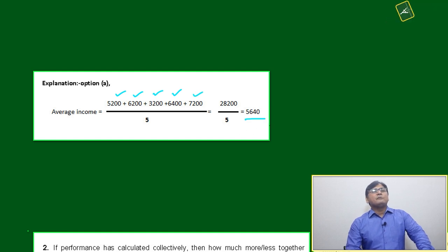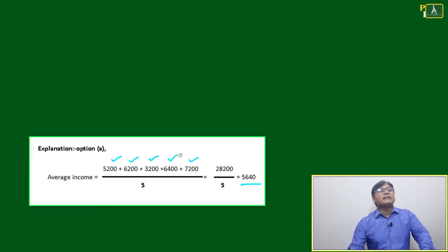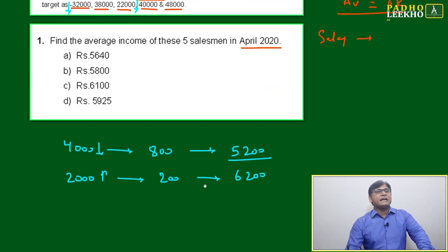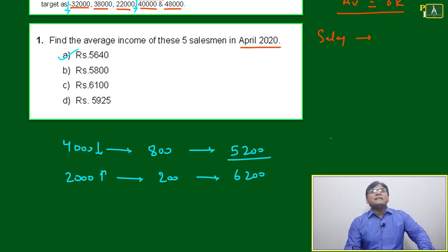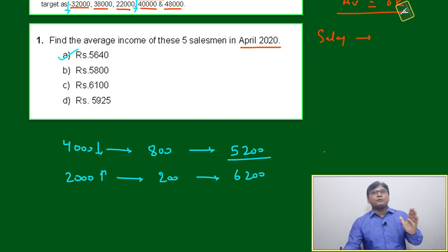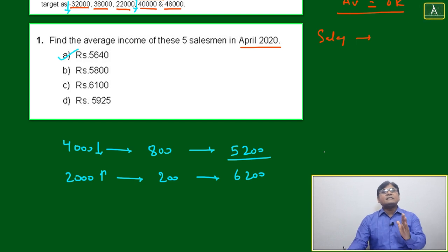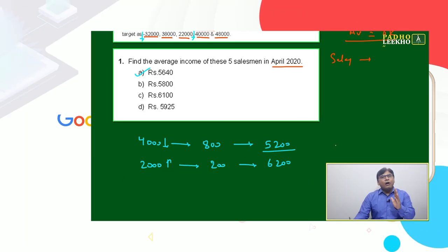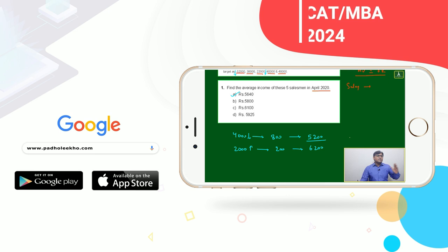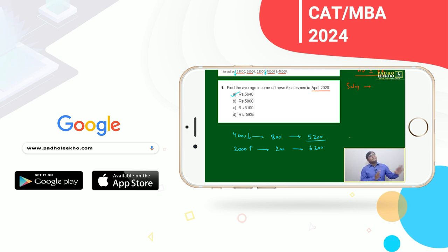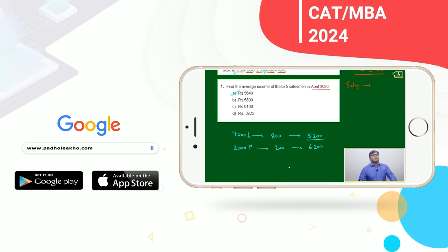Adding all five effective salaries and dividing by five, the average comes out to 5,640. This can also be computed directly based on the deviation from the average — the central tendency of the data. How much is less on one side, how much is more on the other side, and how many data points fall on each side — based on that deviation we can measure the average.